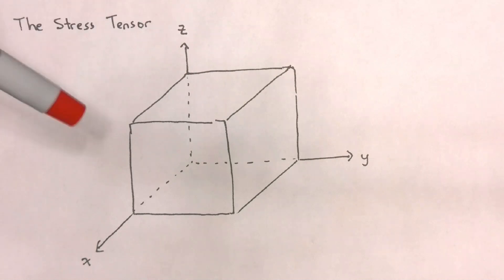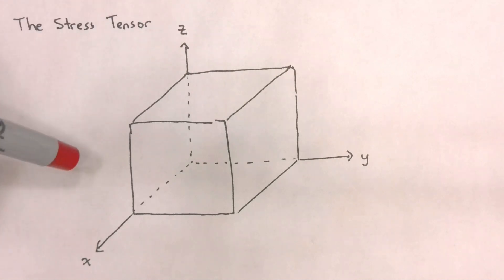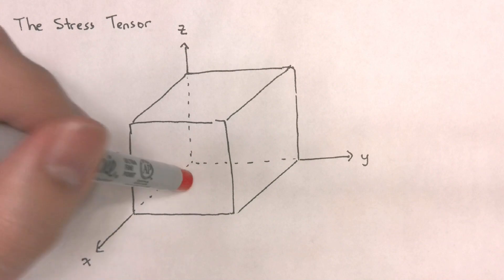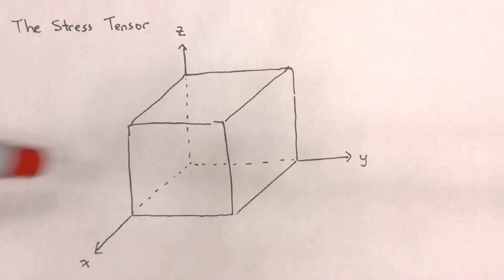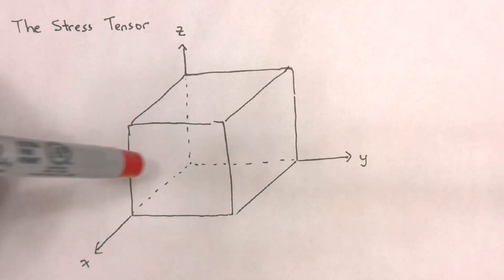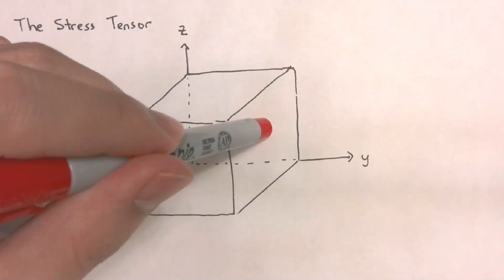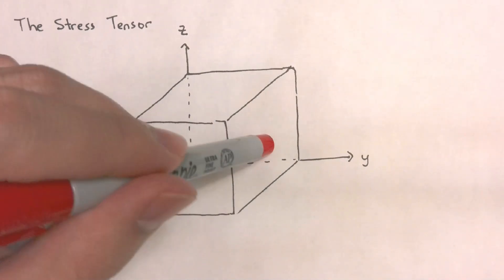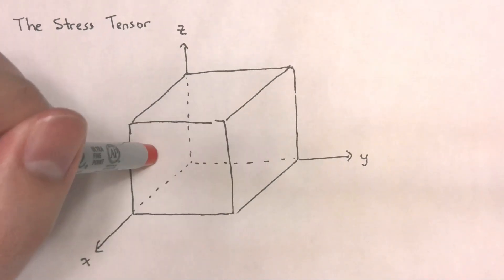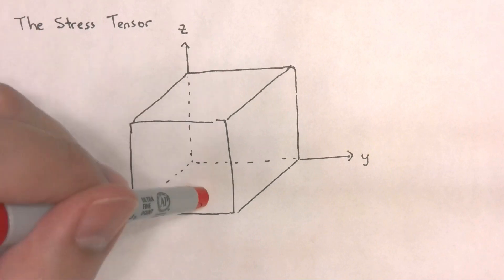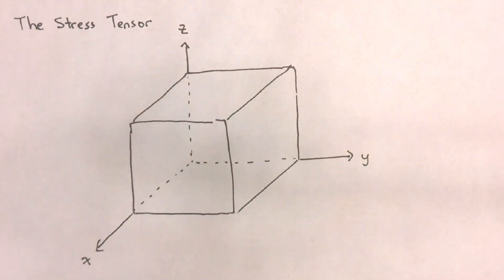Keep in mind that for every axis, there are two faces normal to that axis. We have two x-faces, two y-faces, and two z-faces.